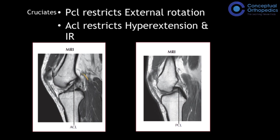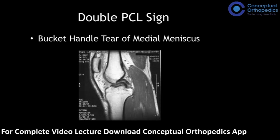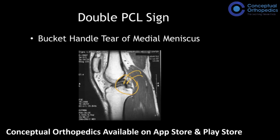The anterior cruciate ligament prevents the anterior translation of the tibia onto the femur and restricts hyperextension and internal rotation. The posterior cruciate ligament, the most posterior structure on the upper end of tibia, restricts external rotation. When there is a tear of the medial meniscus, it sometimes buckles up at the posterior margin and looks like two PCLs — this is called the double PCL sign, an important MRI finding.